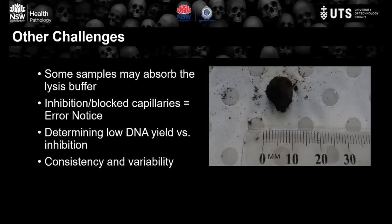The variability of a DVI means that samples of the same type can be dramatically different. Nails, for example, can be clean, covered in decomposition fluid, or attached to tissue, and often even missing by the time an individual reached the temporary mortuary. So now I'll pass on to Ali to continue.